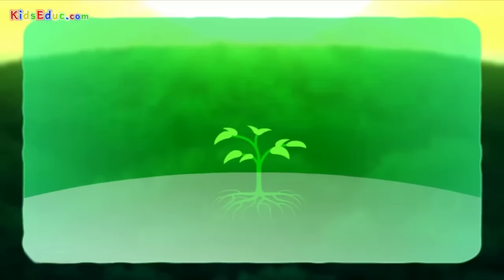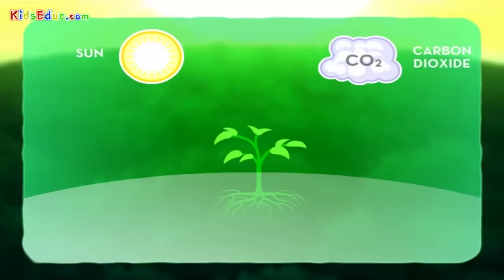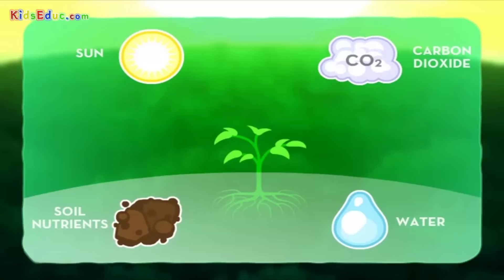Most plants make their own food out of four simple ingredients: sunshine, carbon dioxide, water, and soil nutrients.